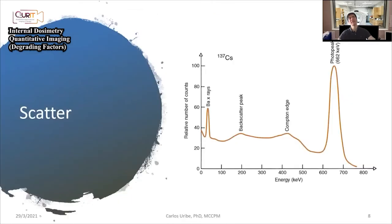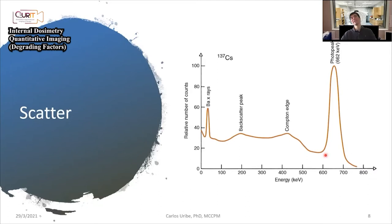We also talked about scatter. In principle, Cs-137 should have only one emission around 662 keV. But because of scattering in the medium, the spectrum you collect has many more energies. We talked about the Compton continuum and the backscatter peak and how these are formed.